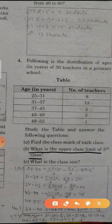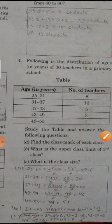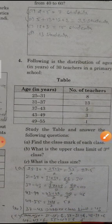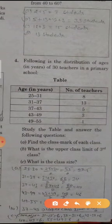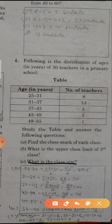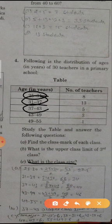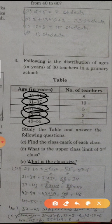Second is, what is the upper class limit of third class? First, second, and third, so upper is 43. Now C, what is the class size? Class size: to find, subtract the lower limit from the upper limit. 31 minus 25 is 6. So all limits are 6. 37 minus 31 also 6, 43 minus 37 also 6, 49 minus 43 also 6, 55 minus 49 is also 6. So 6 is the class size.